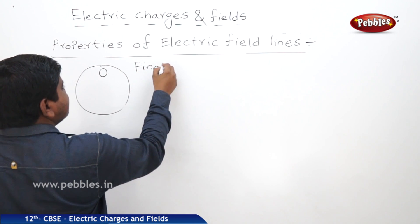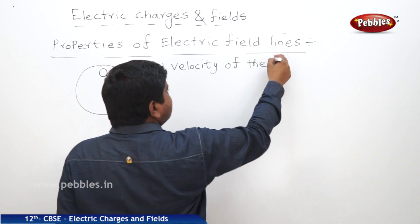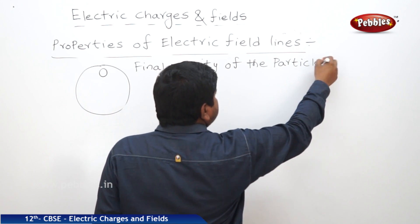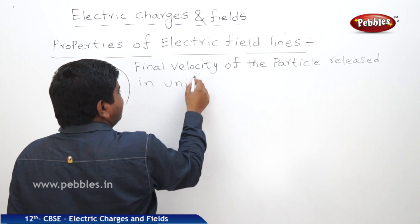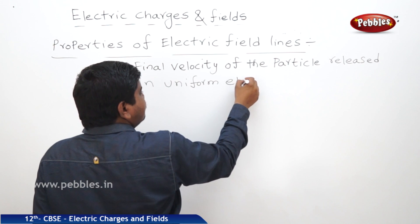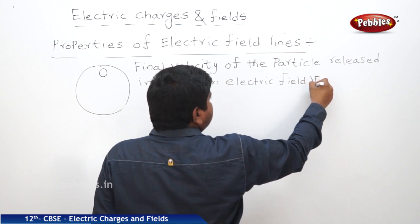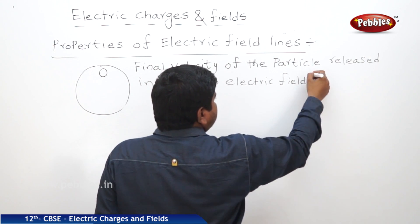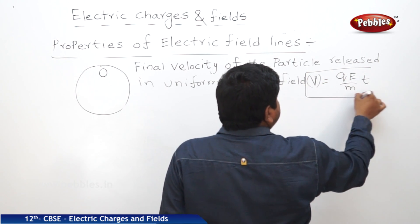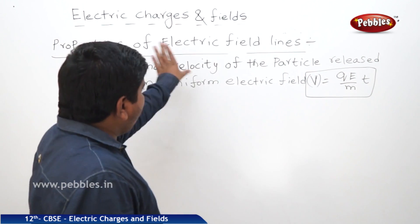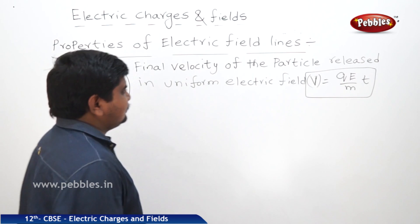The final velocity of the particle released in a uniform electric field is V equal to QE by M into T. Now, how much distance can this particle travel in the electric field? We are going to discuss that.